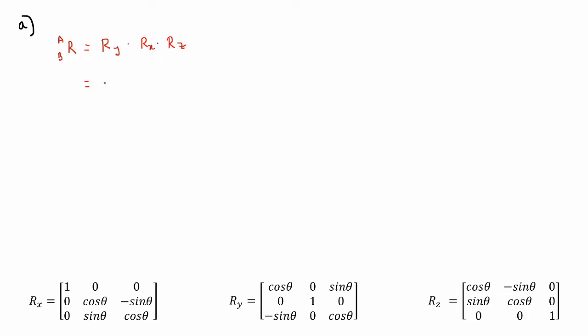So you would get for your rotation around the y-axis cos 30, 0, sin 30, 0, 1, 0, cos 30, 0, negative sin 30, 0, cos 30. This will be multiplied by a rotation in the x-axis. The matrix would be 1, 0, 0, 0, cos 60, minus sin 60, 0, sin 60, cos 60. And finally rotation in the z-axis: cos 30, negative sin 30, 0, sin 30, cos 30, 0, 0, 0, 1.